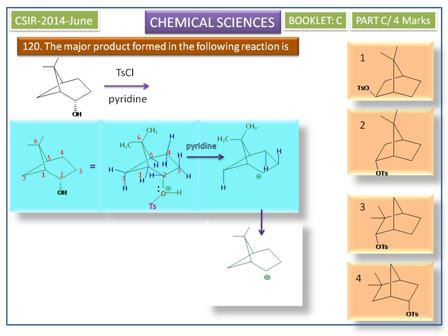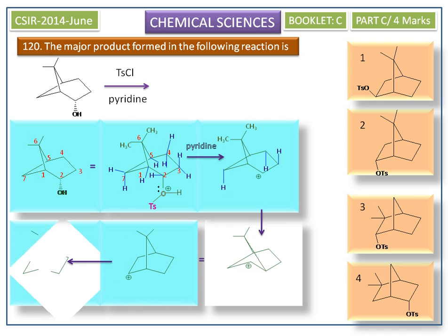This carbocation undergoes a 1,2-alkyl shift, giving the 7,7-dimethyl-bicyclo[2.2.1]heptane carbocation.